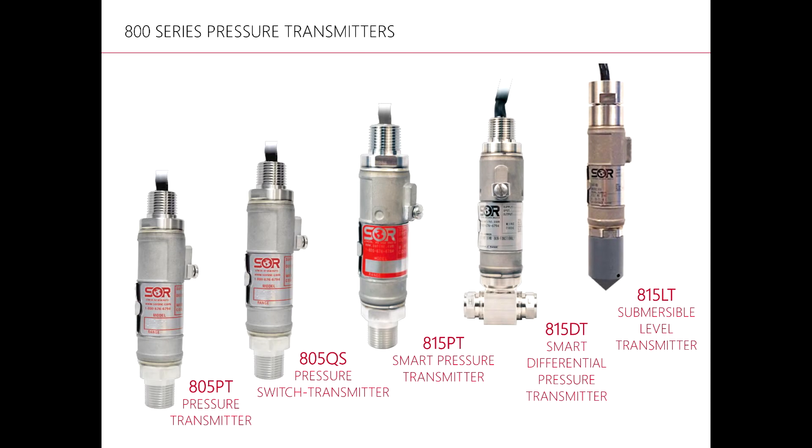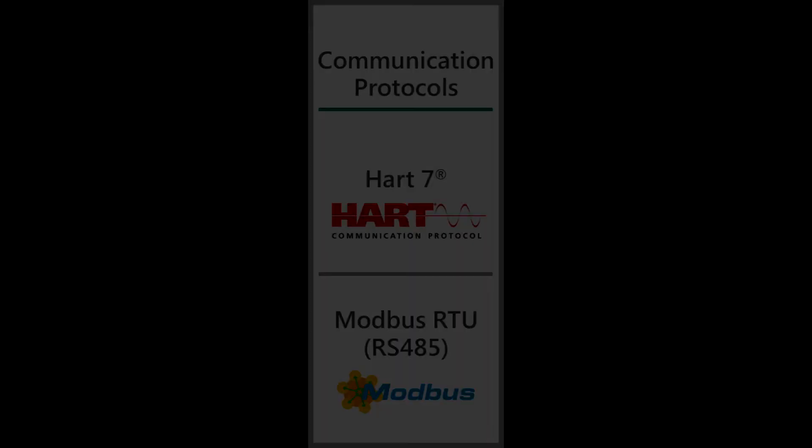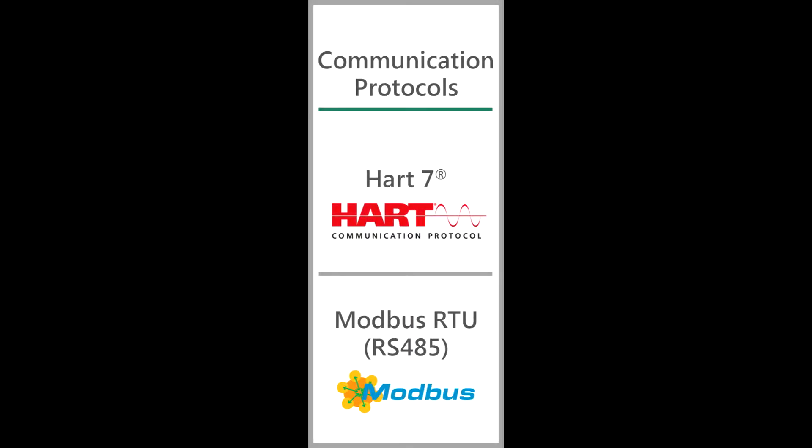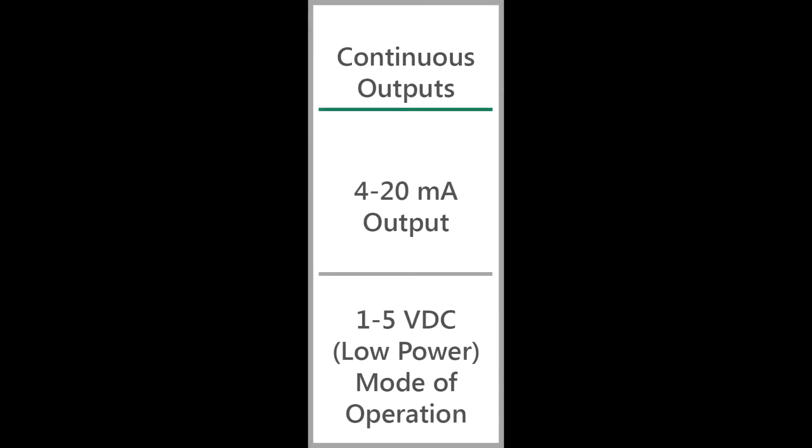The 815LT is actually the same transmitter as the 815PT, except it is now submersible and therefore it has all the same great features and benefits as the 815PT does. This includes features such as HART communication protocol, Modbus RS-485 serial communications, 1 to 5 volt DC output, as well as a 4 to 20 milliamp output. You get all these features whether you ask for it or not.